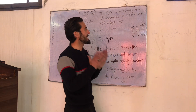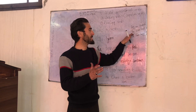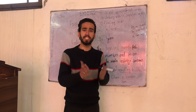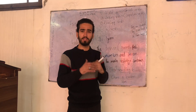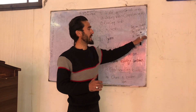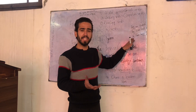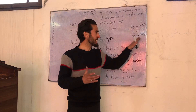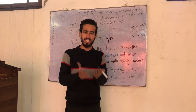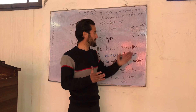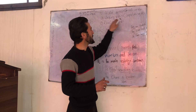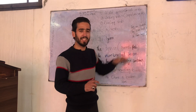Linking verb — for example: 'He seems tired.' The subject is 'he' and 'seems' is the linking verb. It describes the condition of the subject. Another example: 'He looks happy.' Here 'looks' is the linking verb and 'happy' is the condition — the state of being.